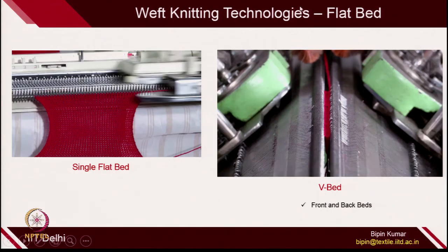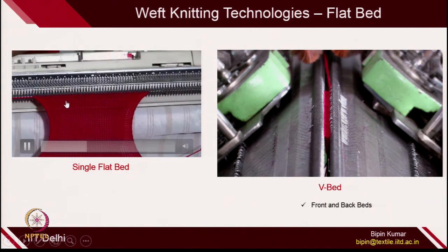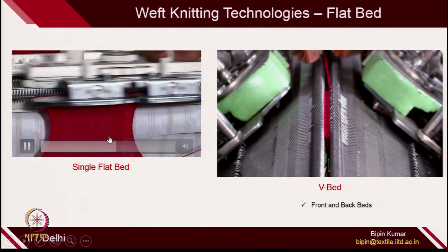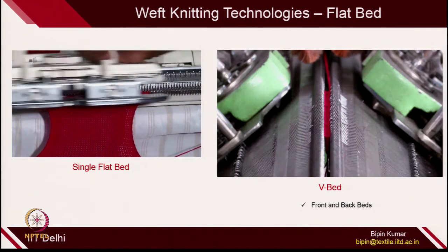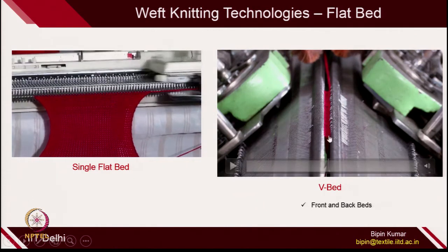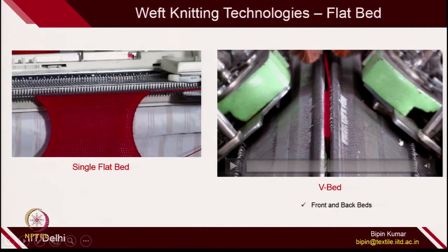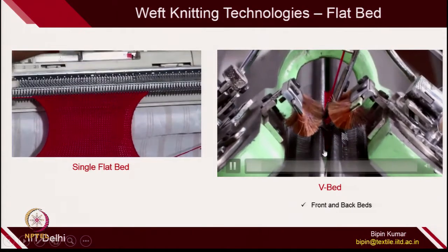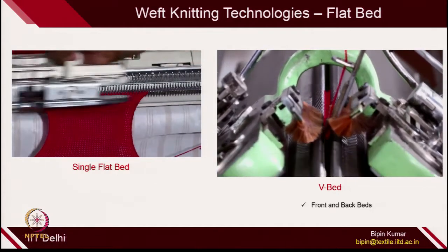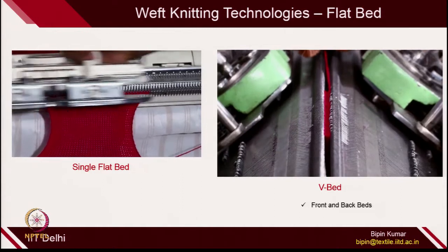In flat knitting technologies, the single flat bed is the most popular, where the cam jacket moves left to right and right to left. You can change width, color, do narrowing and widening on the same machine. The second machine is the V-bed with front and back beds, where 2 sets of needles operate simultaneously. The needles are not facing each other to avoid collision. In V-bed, many innovations have been made, including jacquard knitting machines where each needle of each bed can be individually controlled, giving many design possibilities.